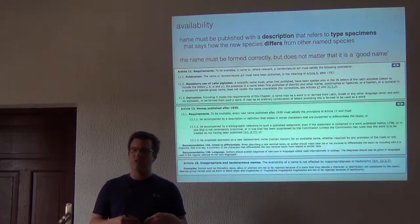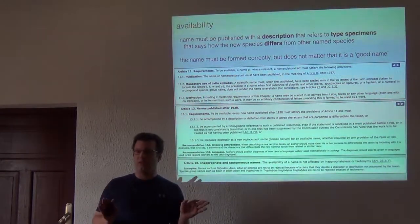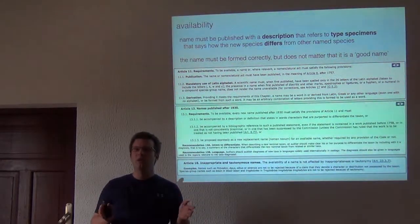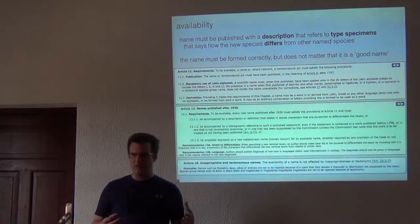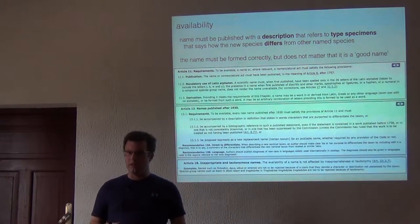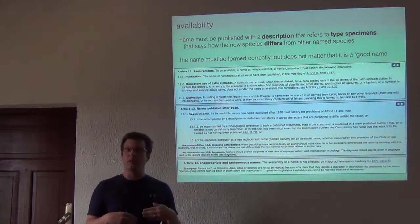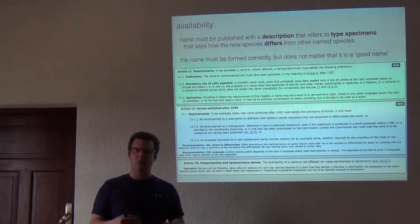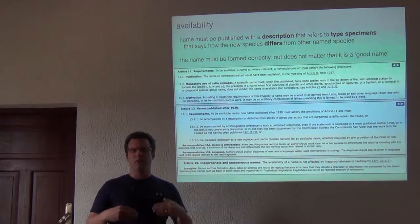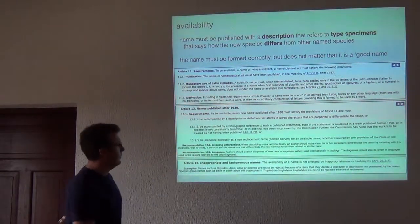If we don't provide that information, we might meet the code as far as having an available name, but we're really not doing a very good job as far as science. We're not actually providing the information that's going to move the field forward, and that's the type of thing that I think all of us believe is a really important part of doing species descriptions — not just simply to name them, but really to help move the systematics and taxonomy of those groups forward through time.